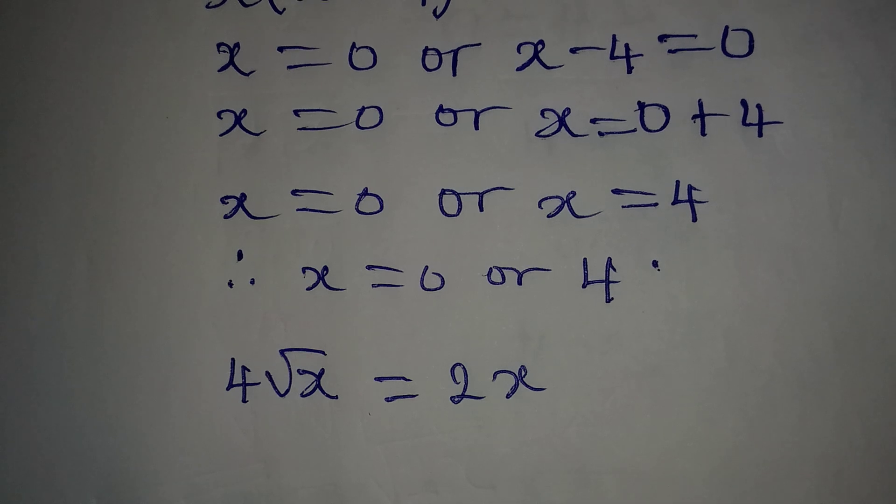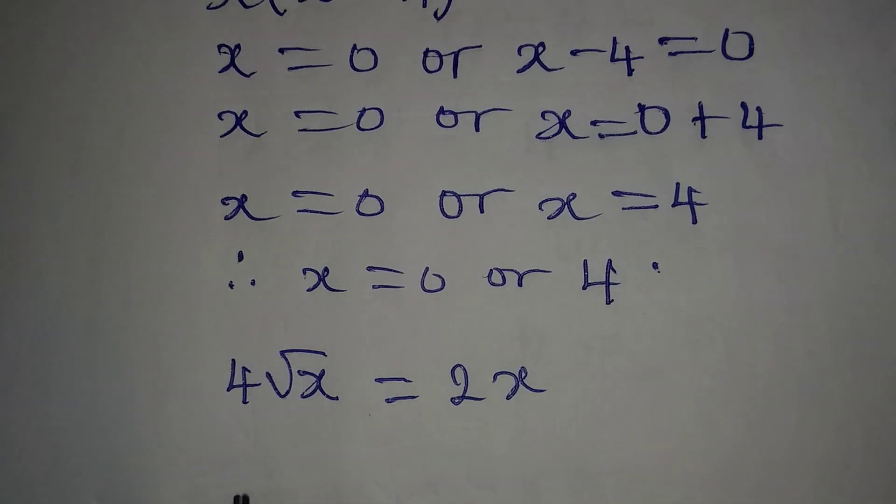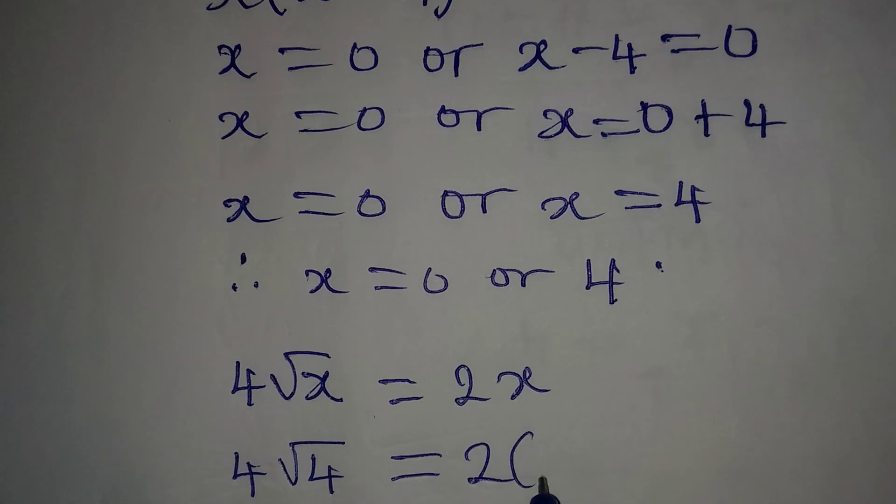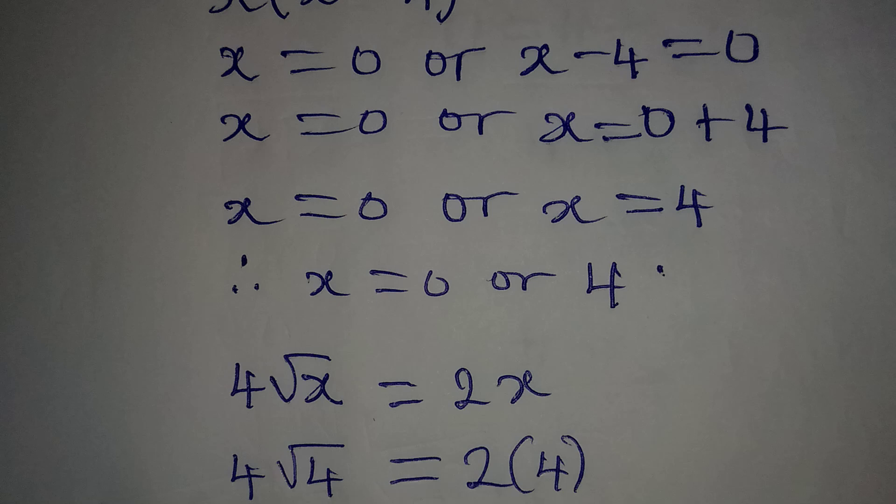But then what if I put 4 in here? It's going to be 4√4 = 2 times 4 because x is 4.